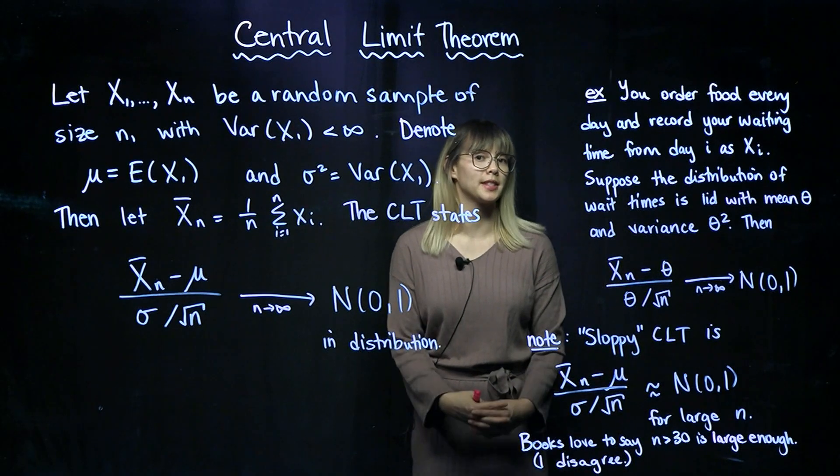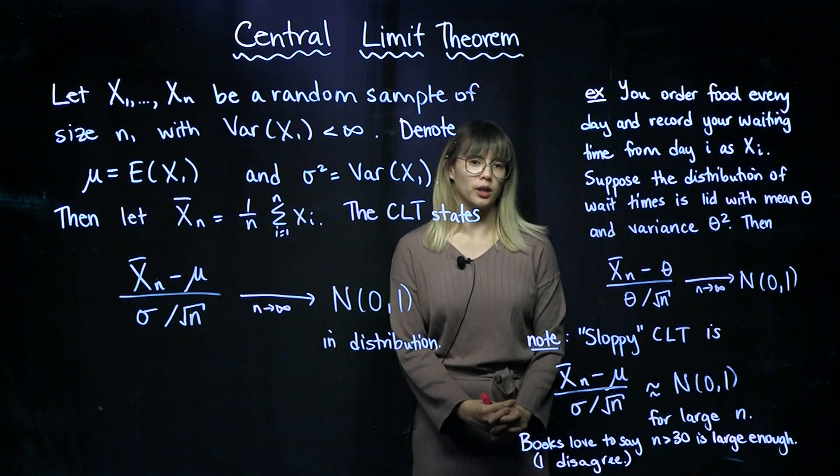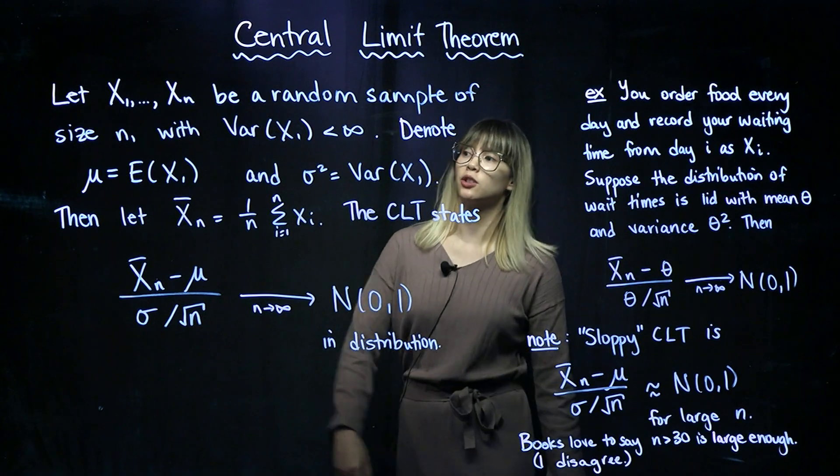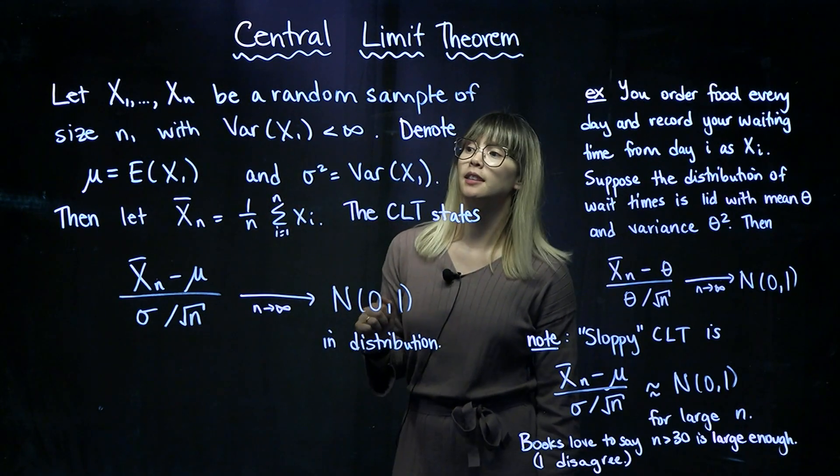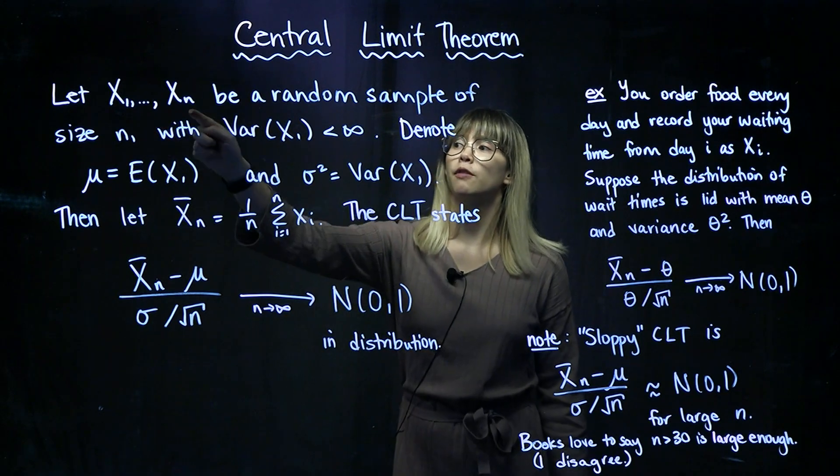In this video, we're going to talk about the central limit theorem. So let's start with a random sample. Let's denote that random sample X1 through Xn. It's a random sample of size n, and we need each one of these to have finite variance.